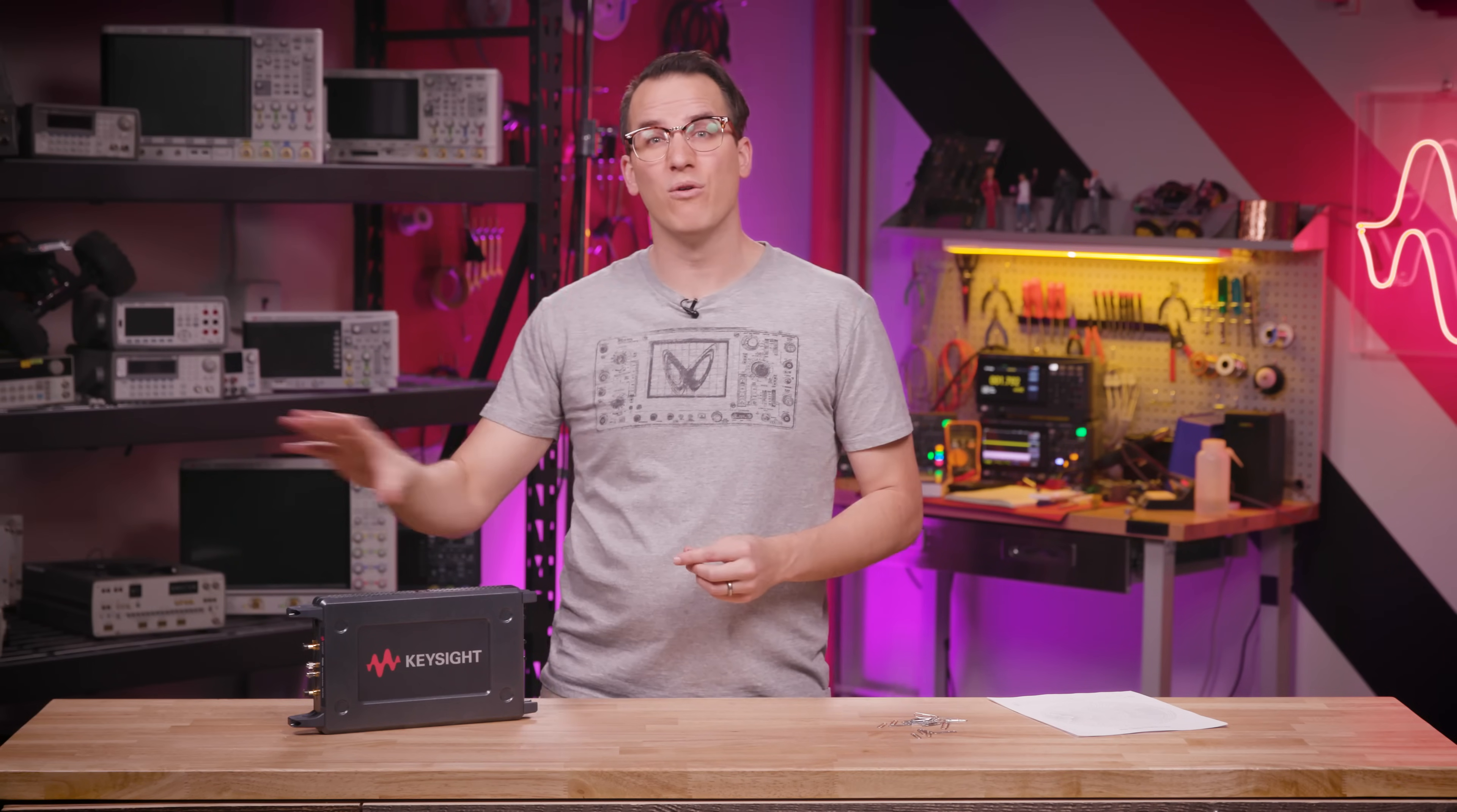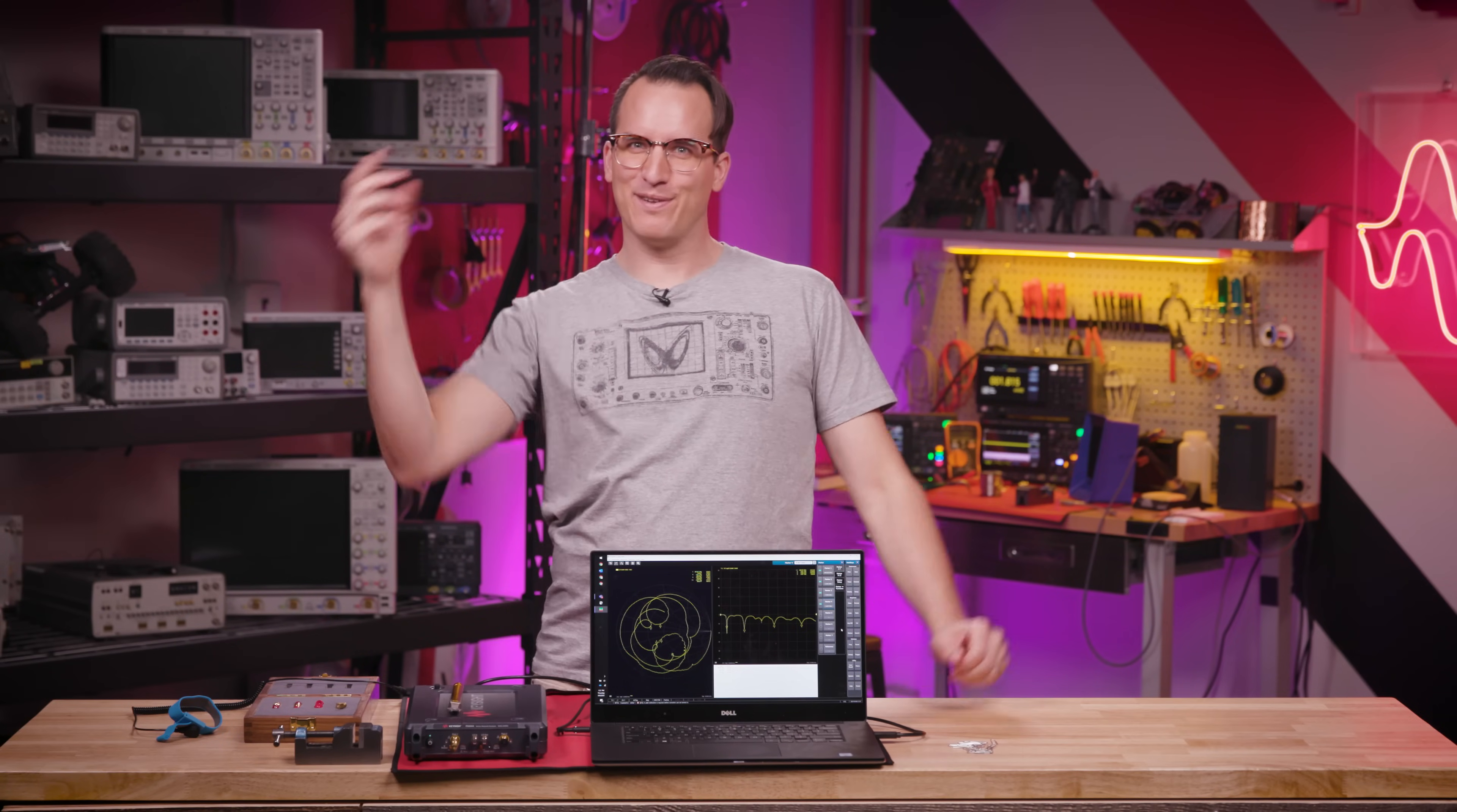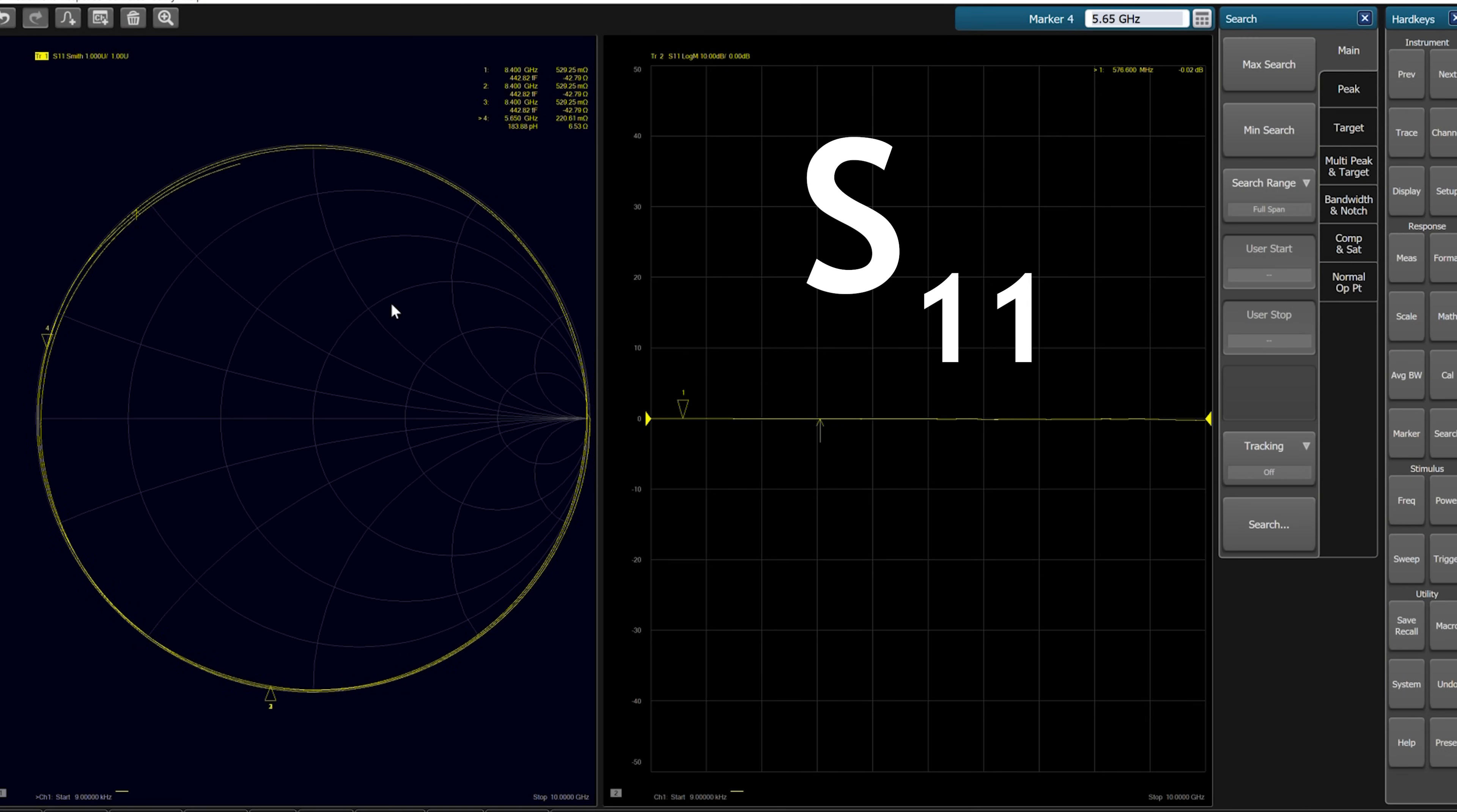What the VNA does is output a known frequency and power and sees what it gets back. We'll solder our paper clip to this SMA adapter, hook it up, and see what happens. So our VNA is all set up, and we have our adapters as a reference plane. This is the exact setup sans paper clip, and you can see on the screen both the Smith chart and the S11 parameters.